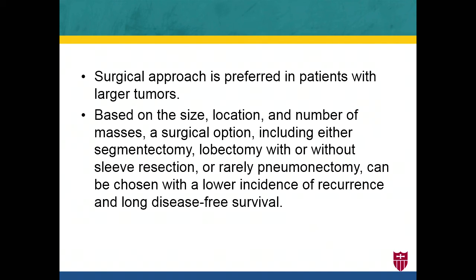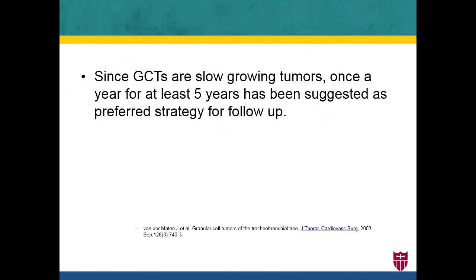If the tumor is large, surgical resection is preferred. Based on size, location, and number of masses, surgical options including segmentectomy, lobectomy with or without sleeve resection, or pneumonectomy can be chosen, with a lower incidence of recurrence and long disease-free survival. For follow-up, Dr. Wender Matten suggested yearly surveillance for about five years. However, there have been cases of recurrence after seven years given how slow-growing this tumor is, so the optimal follow-up duration remains controversial.